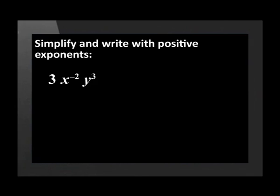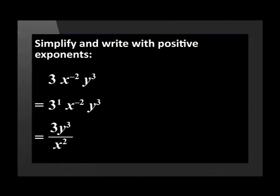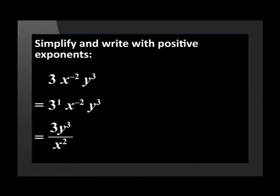Let's look at an example: simplify and write with positive exponents — three times x to the power of negative two times y to the power of three. Remember that all numbers have an exponent; if nothing is written in the exponent space, the number is to the power of one. Three has an exponent of one. The x has a negative exponent, so we rewrite it with a positive exponent by taking the power to the denominator. The three and y cubed stay in the numerator, giving us three y cubed divided by x to the positive power of two.